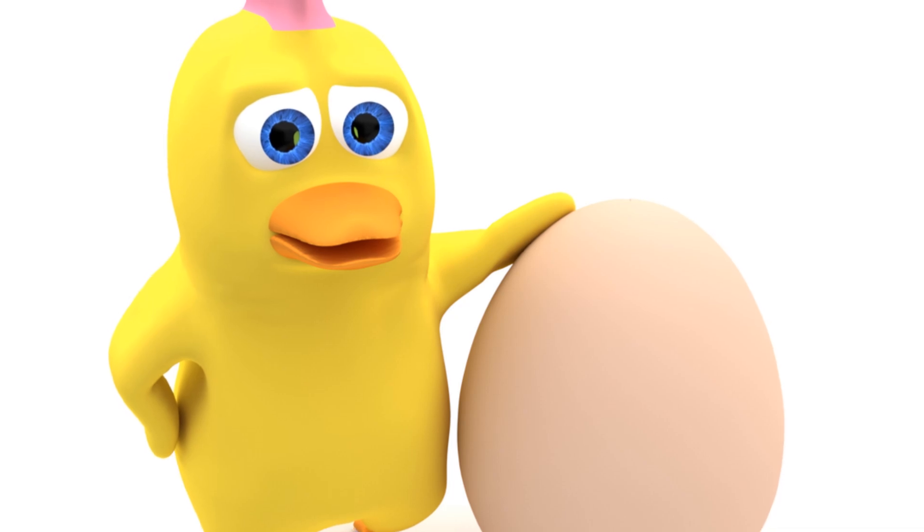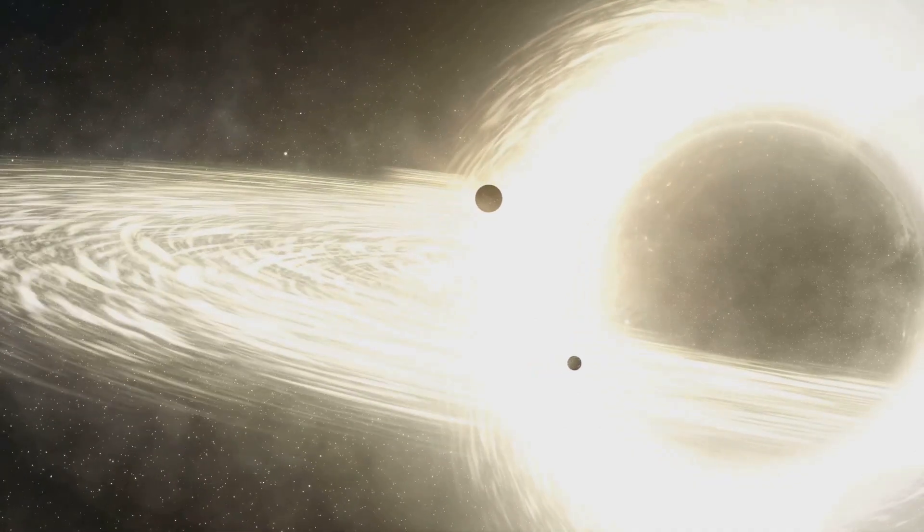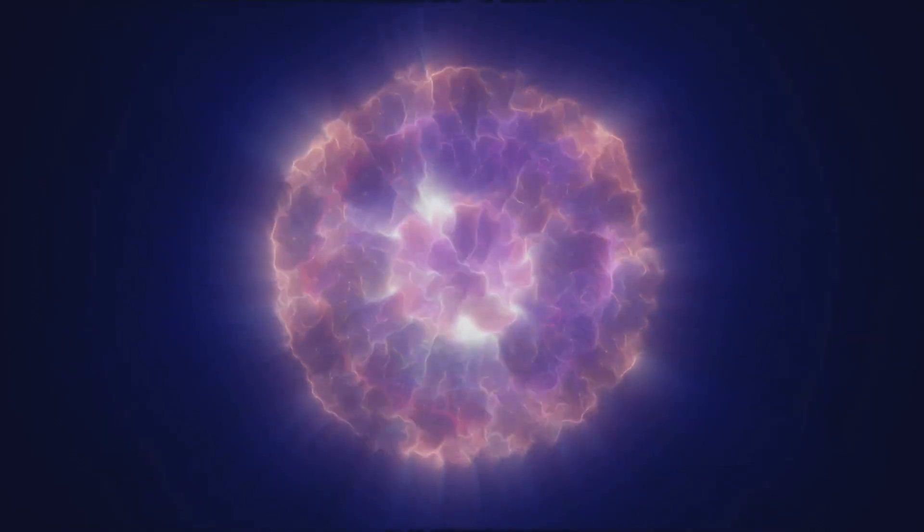It's like a cosmic chicken and egg problem. Black holes grow by devouring matter, but they need a lot of matter to grow supermassive, and in the early universe there simply wasn't enough time for black holes to grow to these monstrous sizes through conventional means. That's where quasi-stars come in.